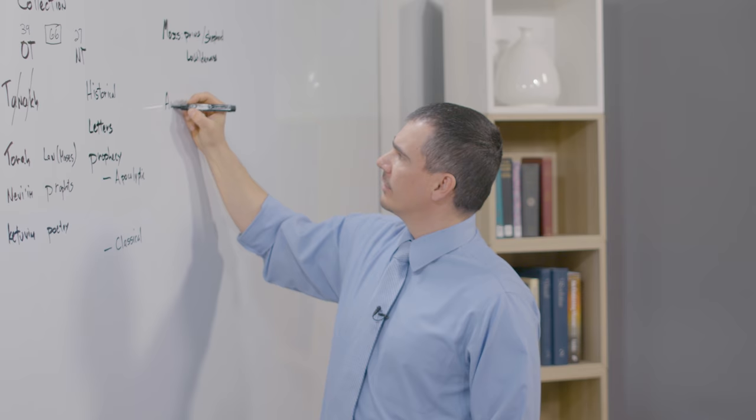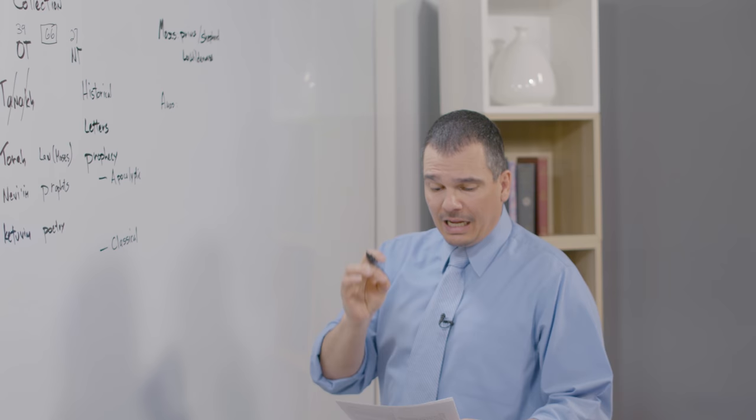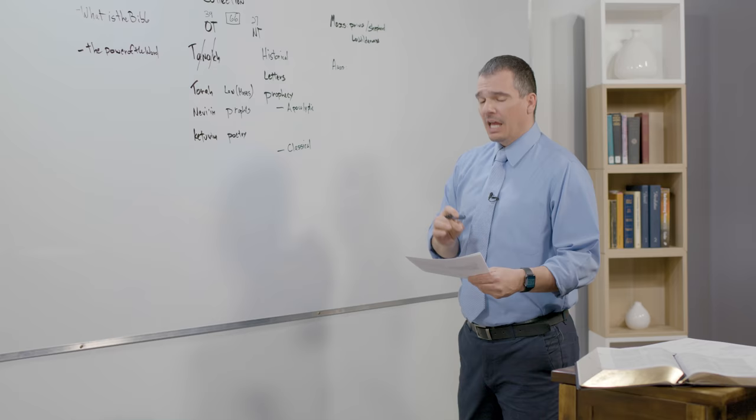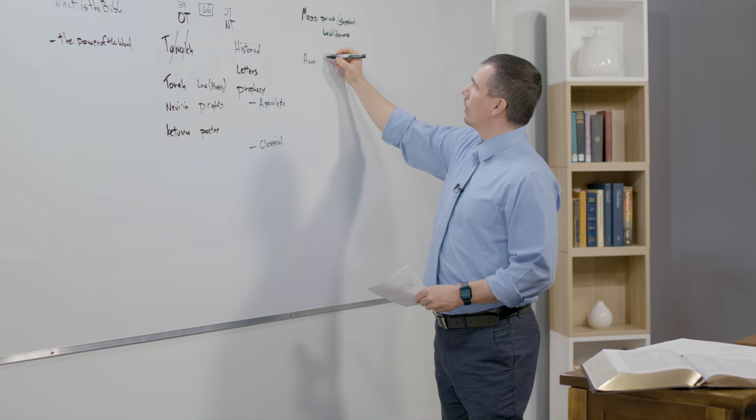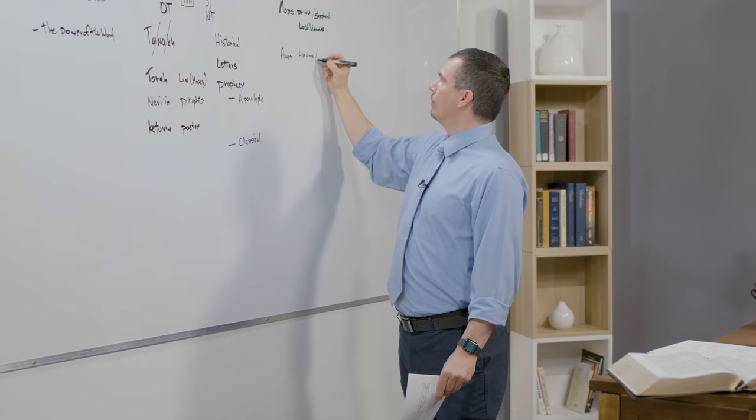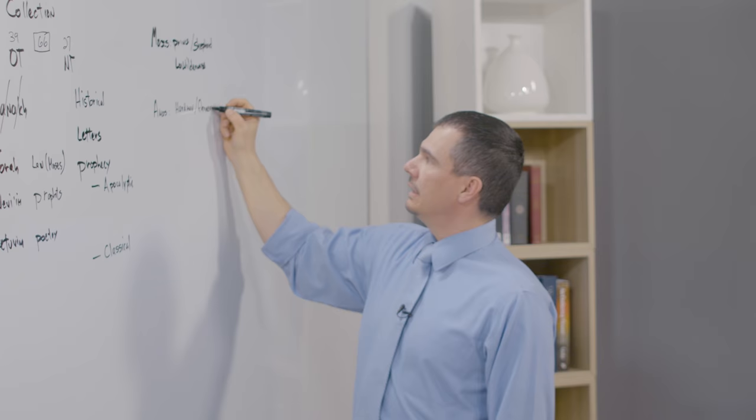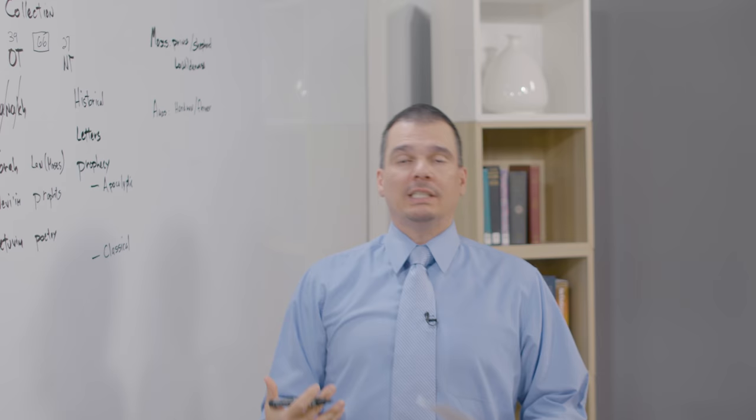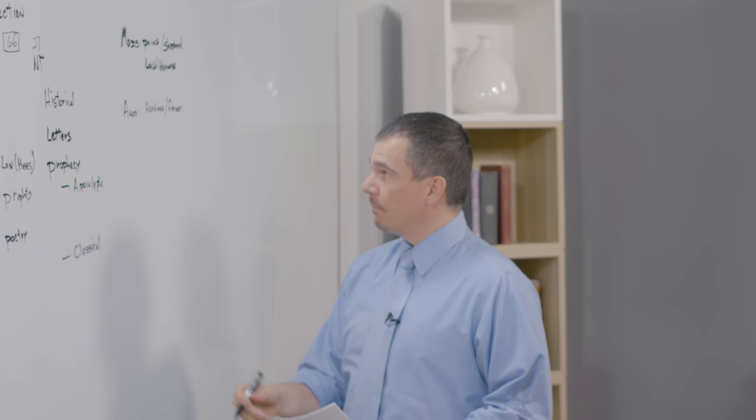Somebody like Amos—Amos was a prophet. But we read in Amos 7:14, he says, I was no prophet, neither was I a prophet's son. I was a herd man and a gatherer of sycamore fruit. He was a farmer. He had no background in prophecy, yet God called him to write and be a prophet.